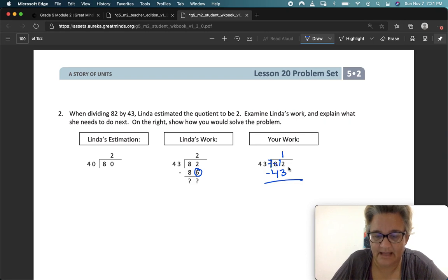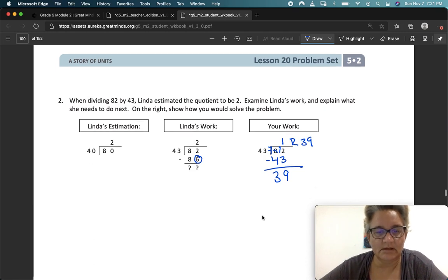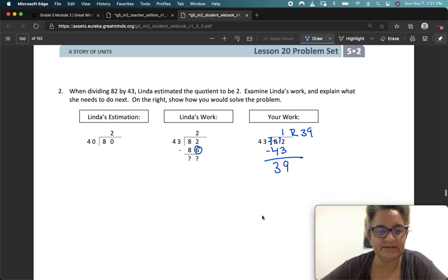We have to go down. And 1 times 43 is 43. Now I'm going to subtract. And I've got 9 here and 3 here. Now I have 1 remainder 39. It wasn't quite enough to get to 82. Now her estimation worked. 40 would go into 82 times, but 43 times 2 would be 86, which is bigger than 82.